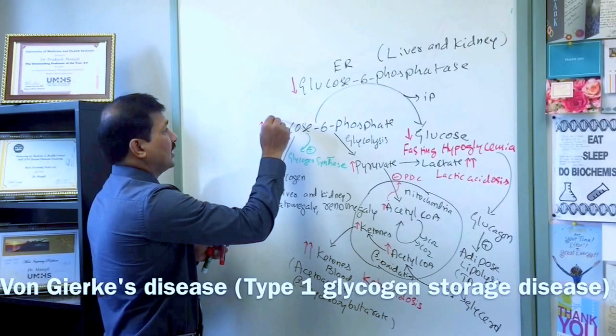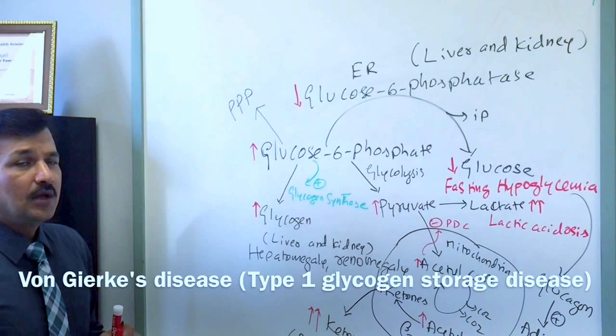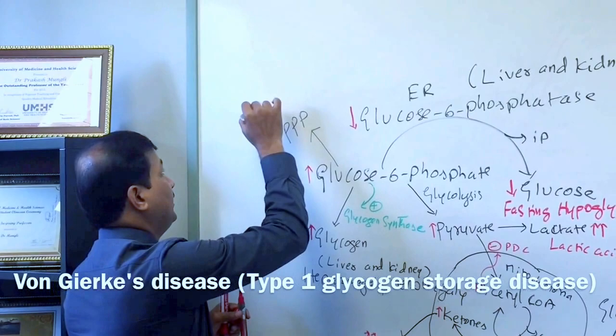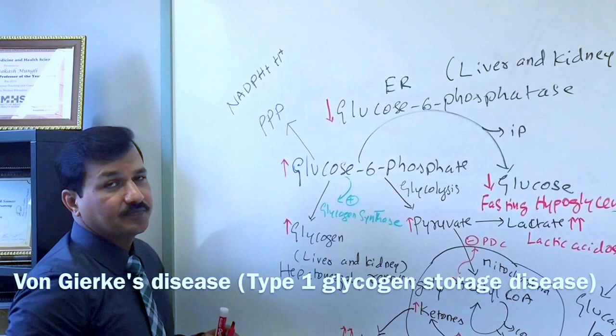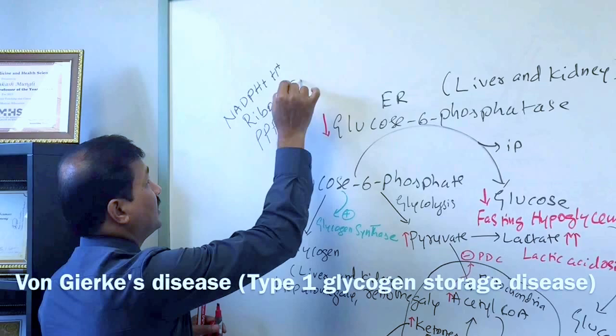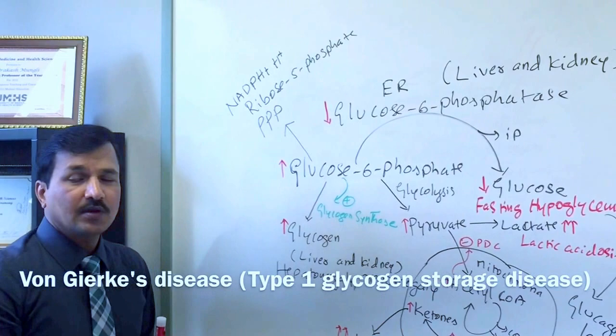Another fate of glucose-6-phosphate is the pentose phosphate pathway. Products of the pentose phosphate pathway include NADPH+H⁺ and ribose-5-phosphate.